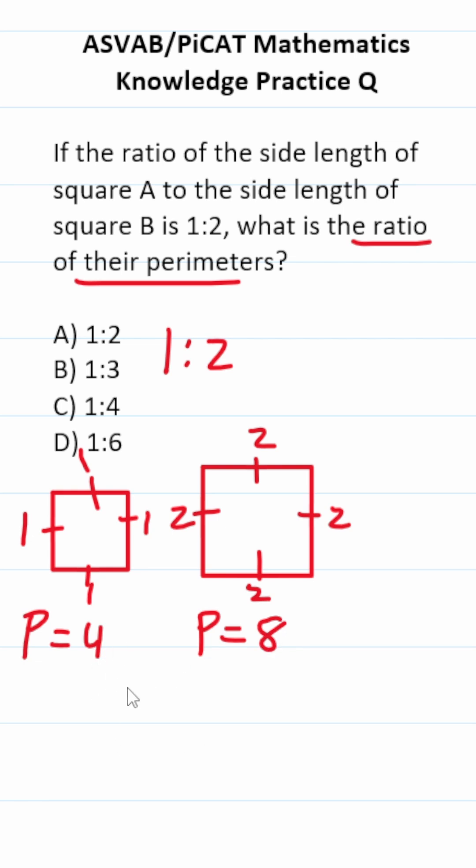All right, so our two perimeters are 4 and 8. Let's find a ratio of those. That's 4 to 8, but we can reduce this by a common factor of 4. This is 1 to 2.